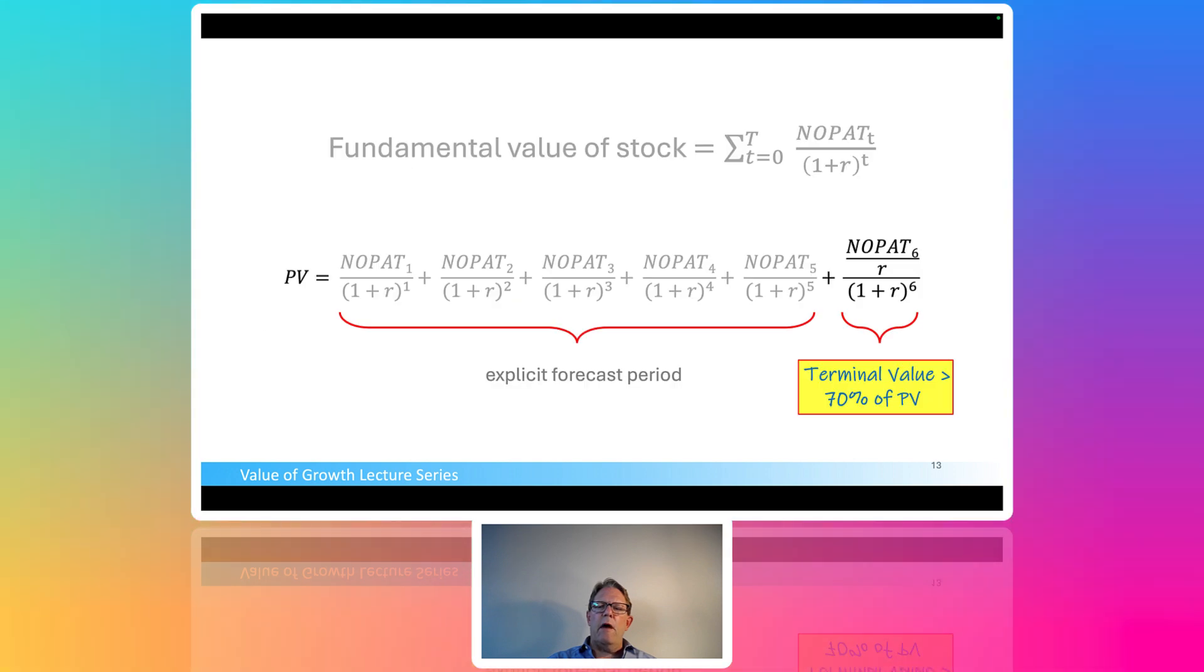All of these approaches have the same flaw. And that is the terminal value is almost always greater than 70% of your present value. So I want to walk you through the implication. If we use a formula based approach to terminal value, we're going to get 70% of our calculated value is going to be in the terminal value. The problem is the terminal value is highly sensitive to the assumptions we make. Move the assumptions around a little bit and that terminal value will swing around like often referred to as the tail on a fish.